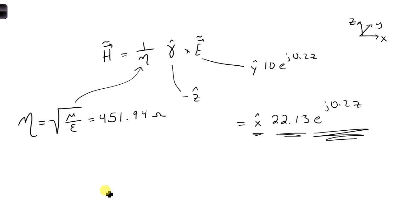Oh, and then actually we're asking for the time domain expression for the magnetic field. So we still need to convert this to the time domain. So we're going to take the real part of this h expression we just got, times e to the j omega t.